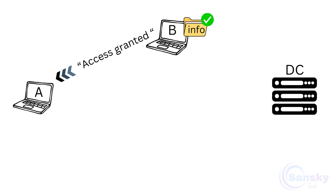B verifies A's NTLMV2 hash, receives the session key, and grants access to the shared folder, enabling secure communication and file transfer between the two systems.